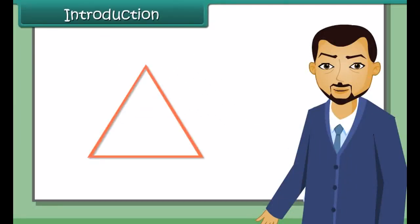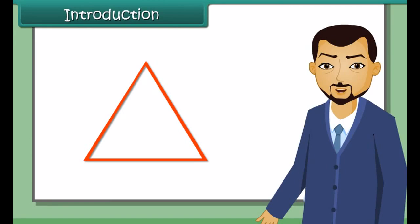We have seen that a triangle has six parts: three sides and three angles. But to construct a triangle, you need to know only three parts. So we can construct a triangle using the SAS, ASA, SSS, and RHS axioms.